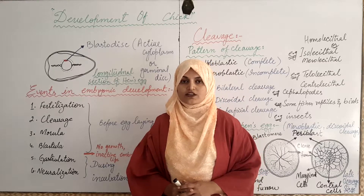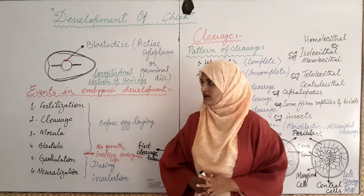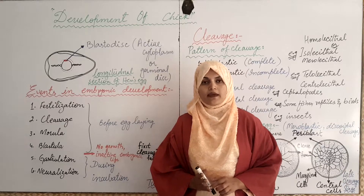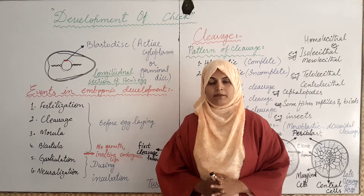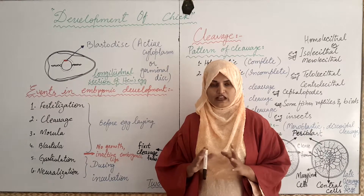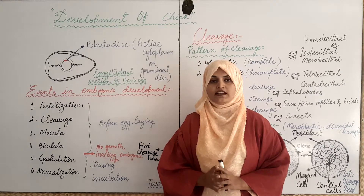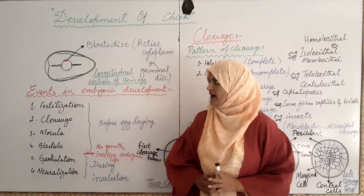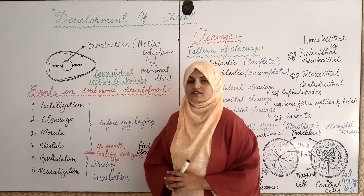In the previous lecture, I have explained the structure of the hen's egg. This egg is polylecithal, also termed as megalecithal and microlecithal. It is also mesolecithal. It consists of a large amount of yolk that spreads throughout the egg, and as a result, only a small portion remains which is termed as blastodisk. This blastodisk is also termed as germinal disk or active cytoplasm.